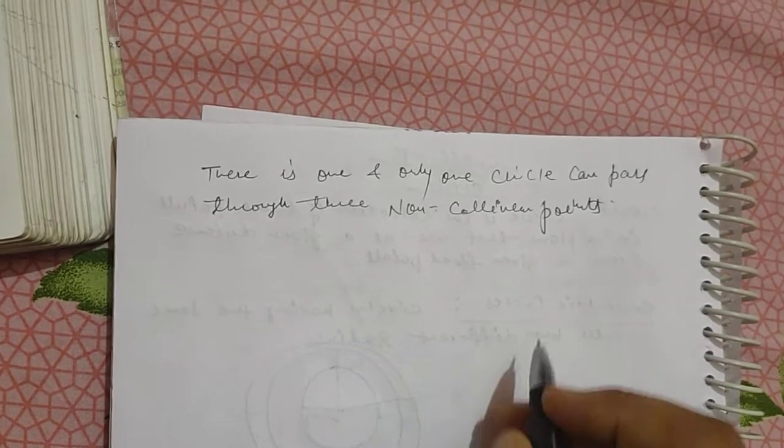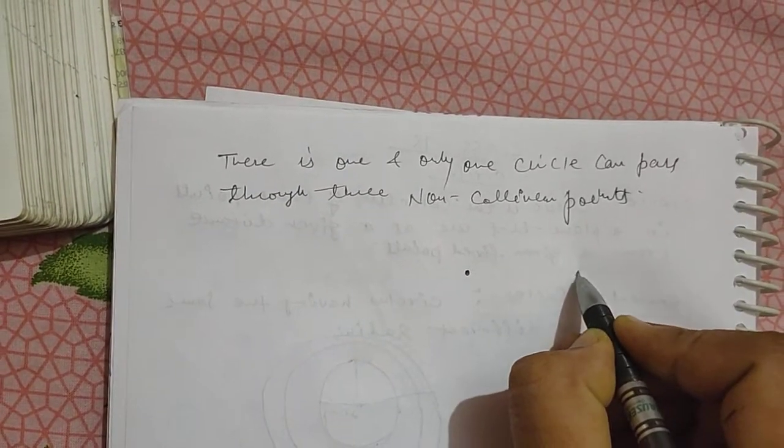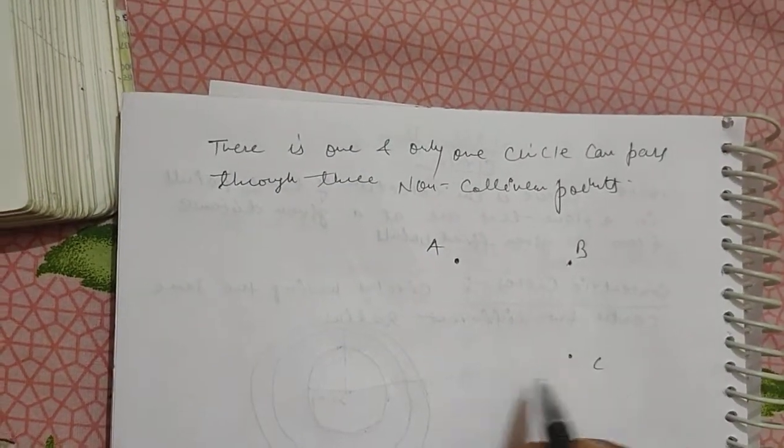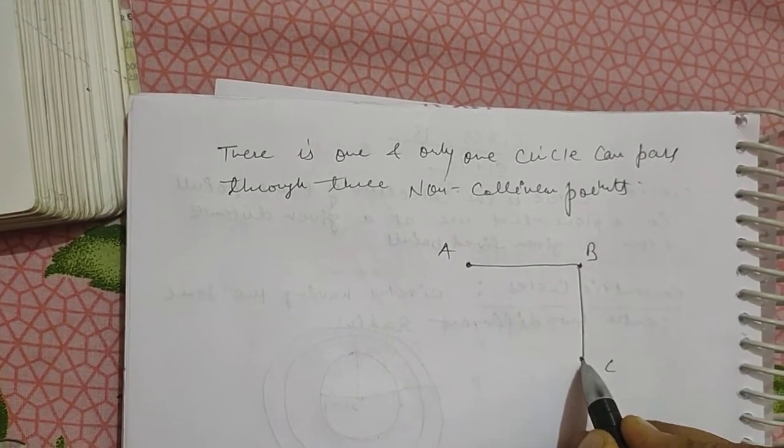Let's take three points. Non-collinear: one, two, three - A, B, C. Join A, B and B, C.